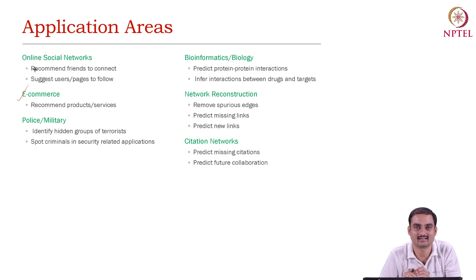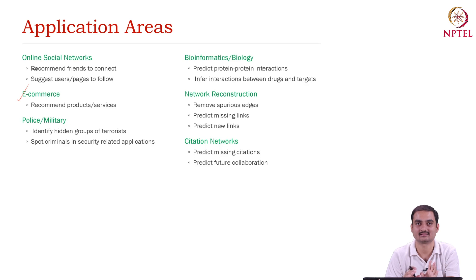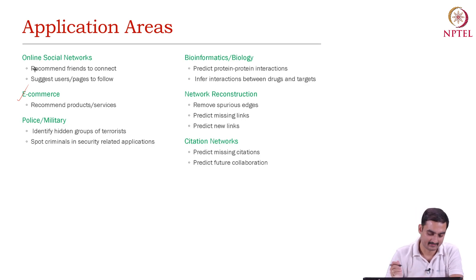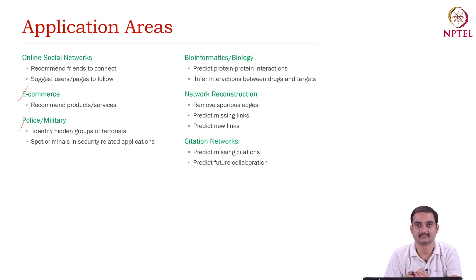In e-commerce, when you look at platforms like Amazon or Flipkart, products are recommended to you. We have briefly discussed how this recommendation engine works: once you know the community structure and clusters, and once you know that other nodes within a community have already shown interest in certain products, it is highly likely that you will also be interested in buying that product. Recommendation systems are essentially a link prediction problem. In law enforcement — police, military — identifying hidden groups, hidden identities, hidden links, and spotting criminals also falls under the broad purview of link prediction.